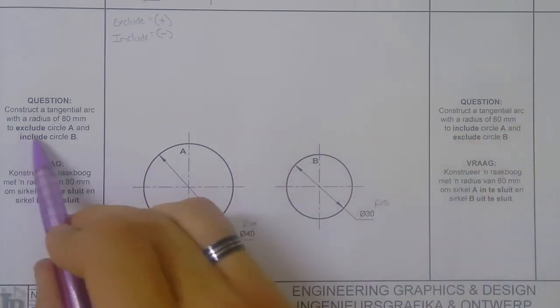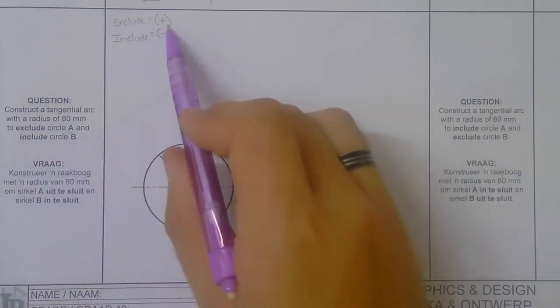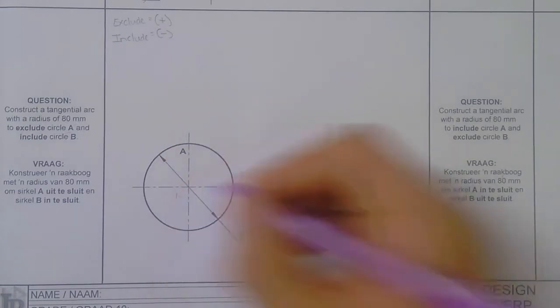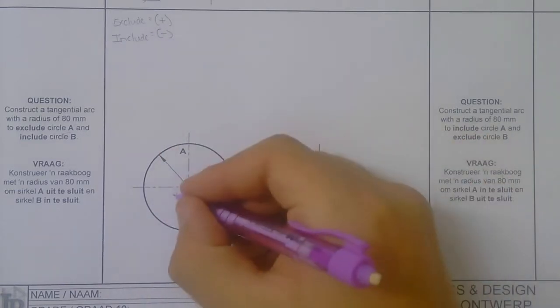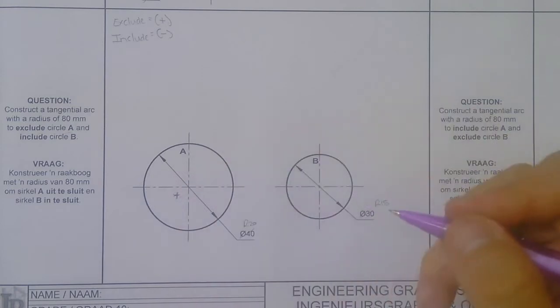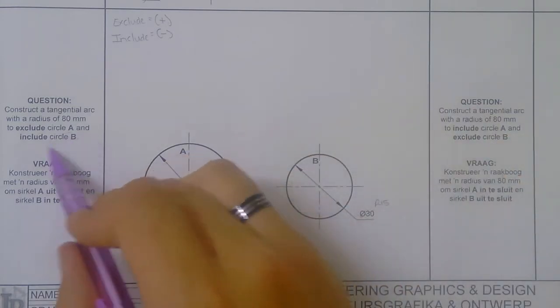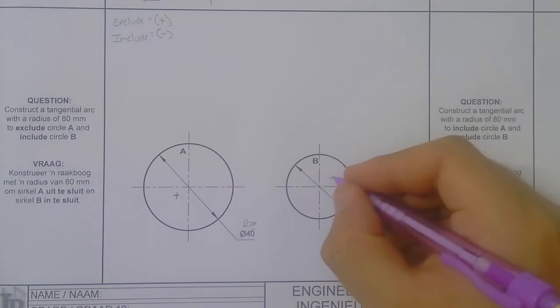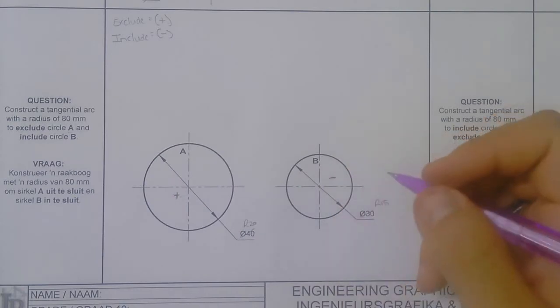Exclude is plus, so this one we're plussing. And then that means include circle B, so this one we're minusing. So how do we do that again? Let's go here.